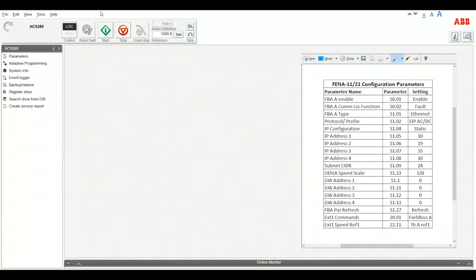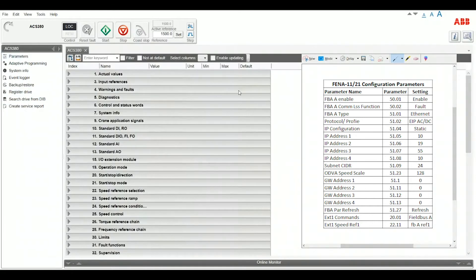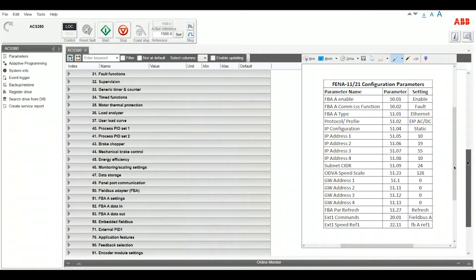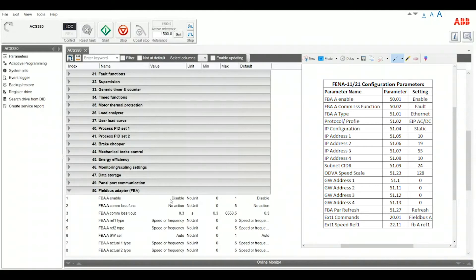Here we have Drive Composer. You can see our ACS 380 is connected and we go down to our options menu on the left hand side and we'll go to parameters. All the ones we want to add I have imposed on the right side here and you can see the first one we have is 50. So we go down to parameter 50 field bus adapter and 01 would be field bus A enable.